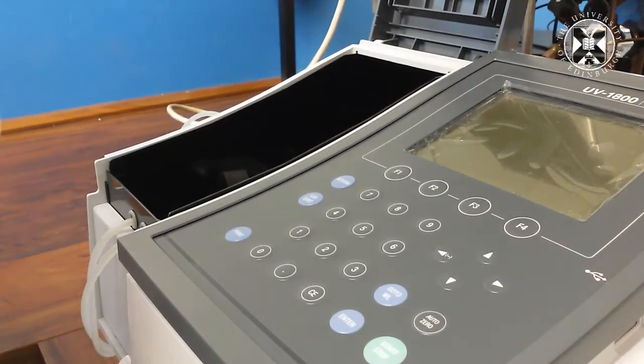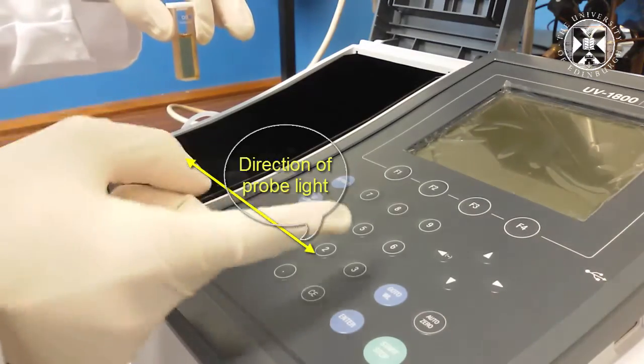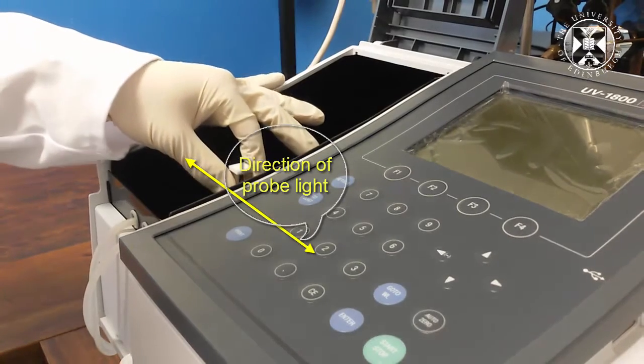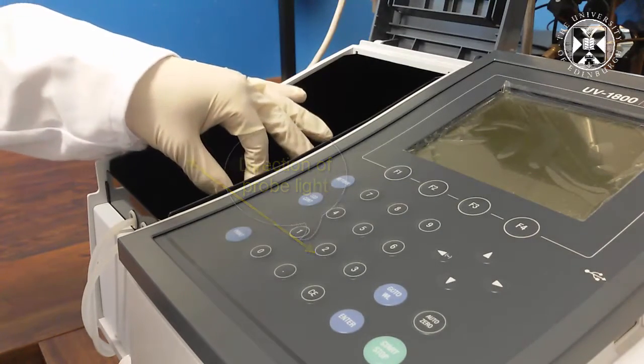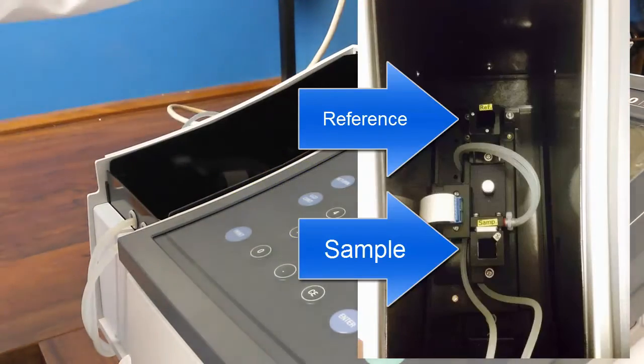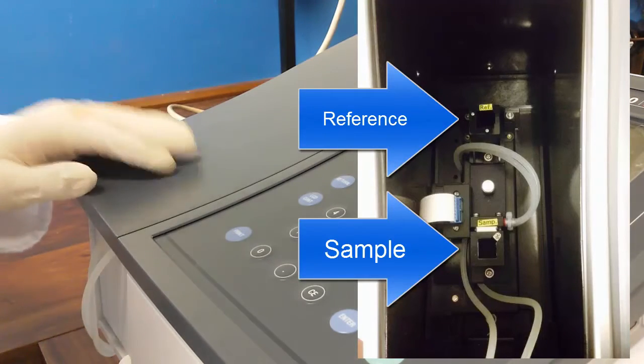To insert the sample into the spectrometer, open the lid and make sure the clear sides are going in this direction. Place it in the sample hole, which is shown in a picture in the pre-lab. Then close the lid to record the spectrum.